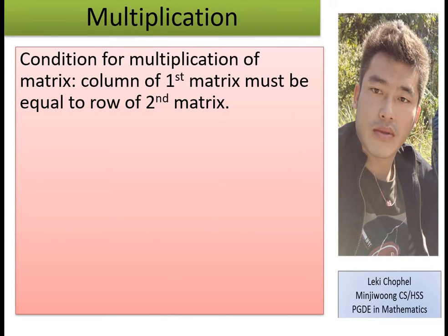In order to multiply matrices, you have to know a certain condition: you can multiply matrices only if the column of the first matrix must be equal to the row of the second matrix. If they are not equal, we cannot multiply.